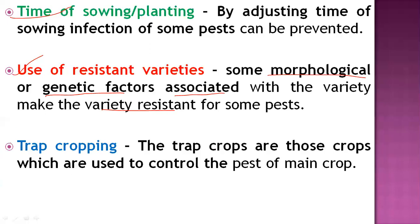The next practice is trap cropping. Trap crops are secondary crops used to attract pests away from the main crop. For example, marigold can be used around cotton fields to attract bollworms and Helicoverpa. Castor planted around soybean fields can attract Spodoptera, reducing its infestation on the main soybean crop. This is the general use of trap crops.